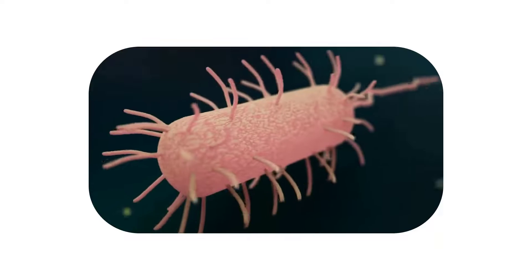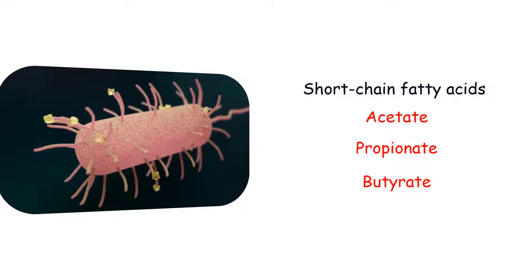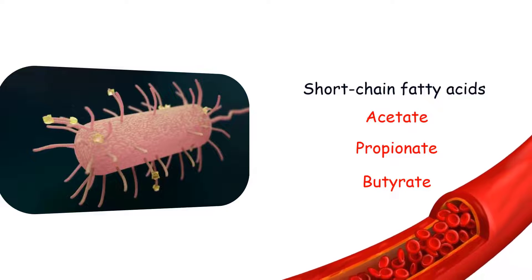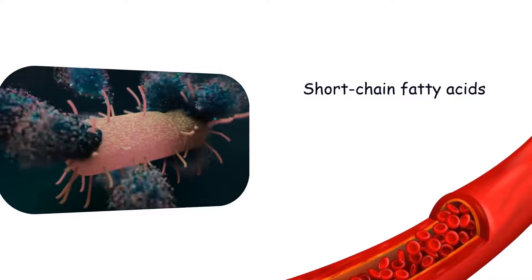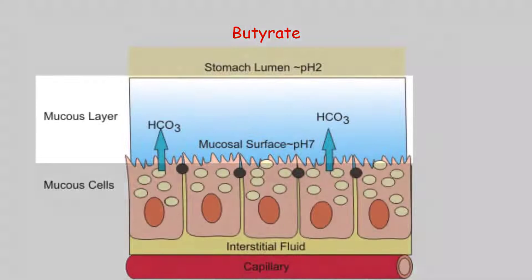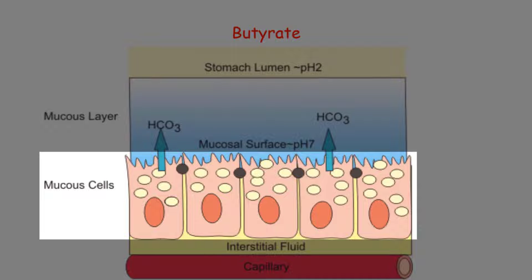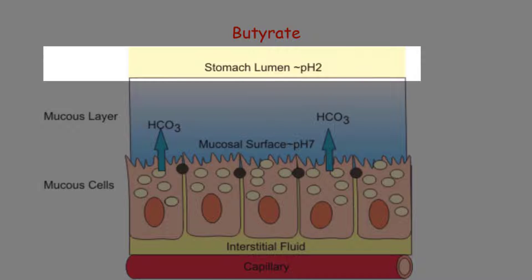When the beneficial bacteria break down undigested carbohydrates, they yield short-chain fatty acids — with acetate, propionate, and butyrate being the most common. Once created within the digestive tract, these short-chain fatty acids can enter the bloodstream. In this complex choreography, butyrate takes on the role of a genuine guardian of the digestive tract. It contributes to increased mucus production, forming a protective shield for the epithelial cells against the harsh and acidic contents found within the digestive tract lumen.